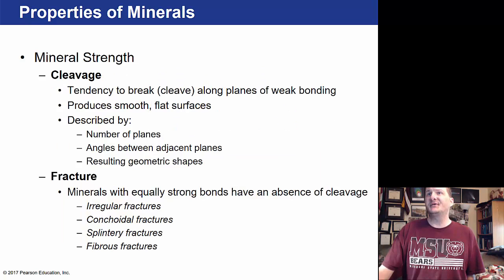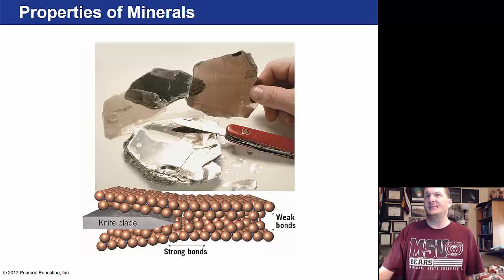Cleavage is the tendency to break along planes of weak bonding, producing smooth and flat surfaces. It is described by the number of planes, the angles between adjacent planes, and the resulting geometric shapes. Fracture describes minerals with equally strong bonds and an absence of cleavage. Mica, for example, has thin slices that break apart very easily like a knife blade.